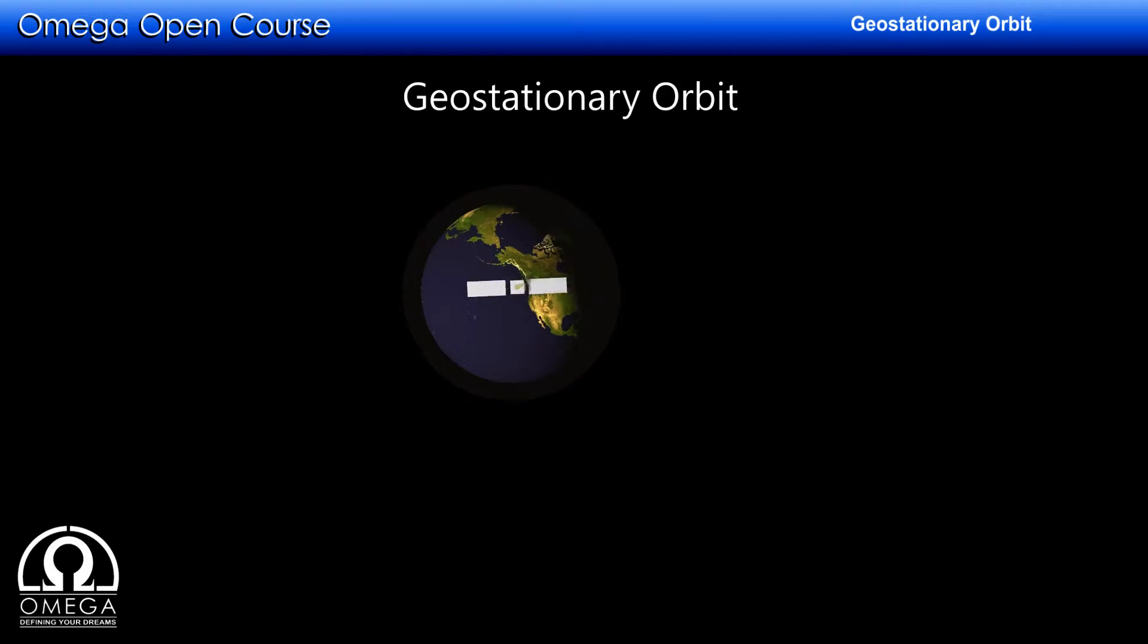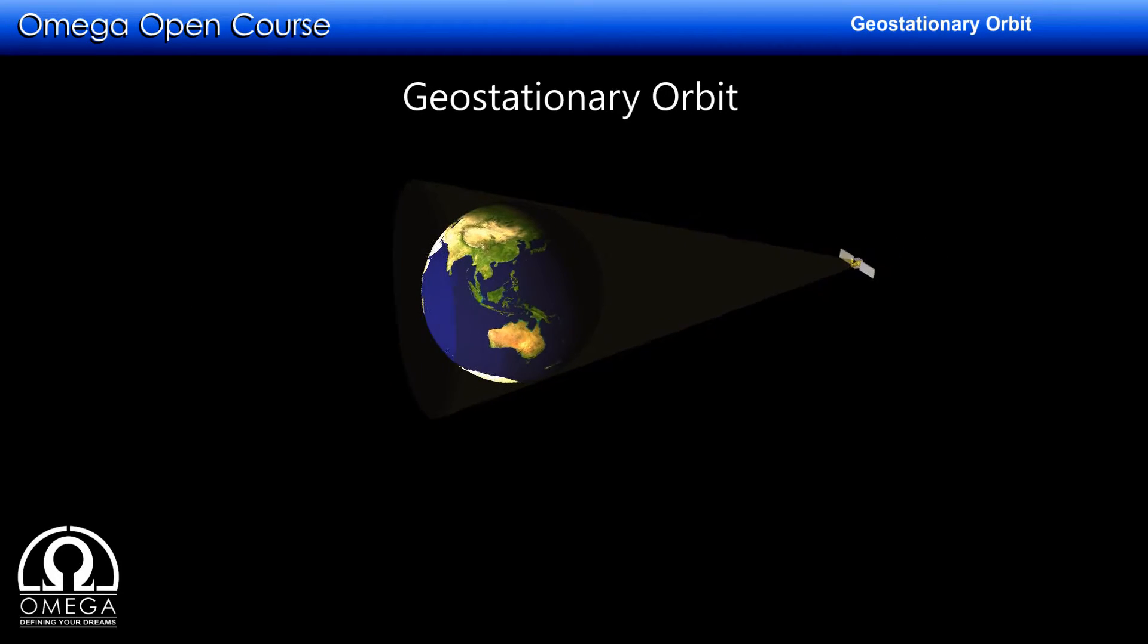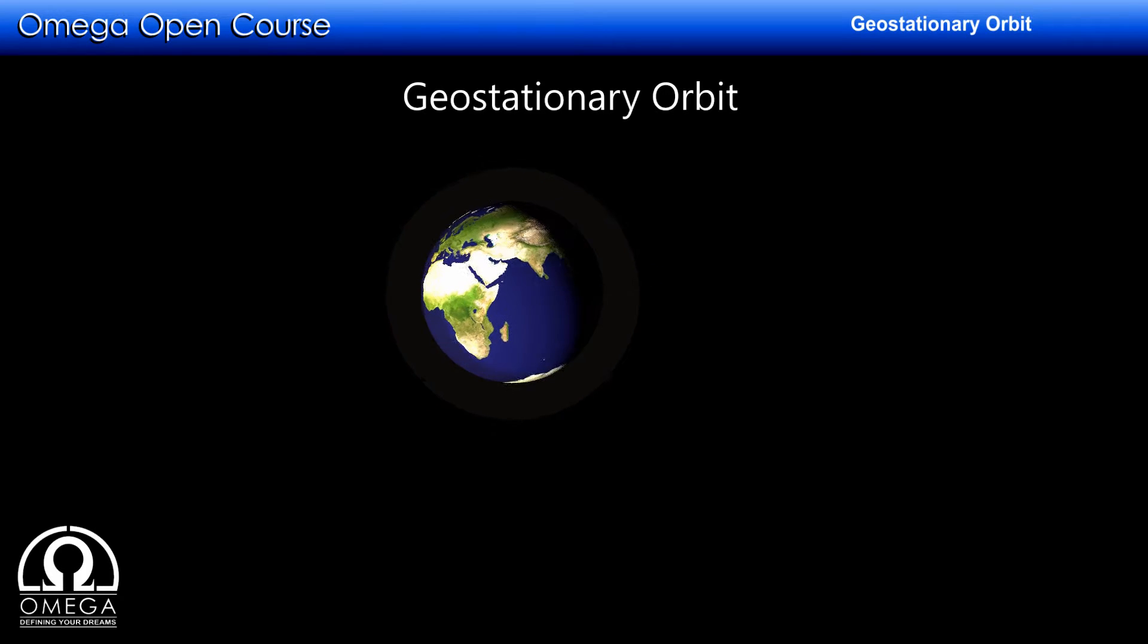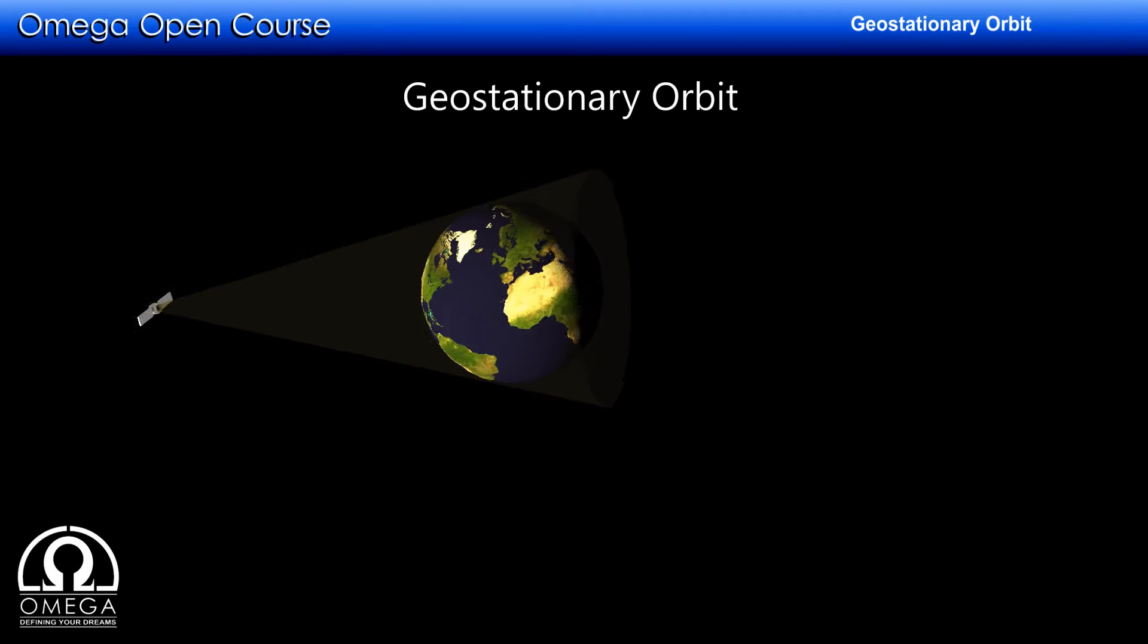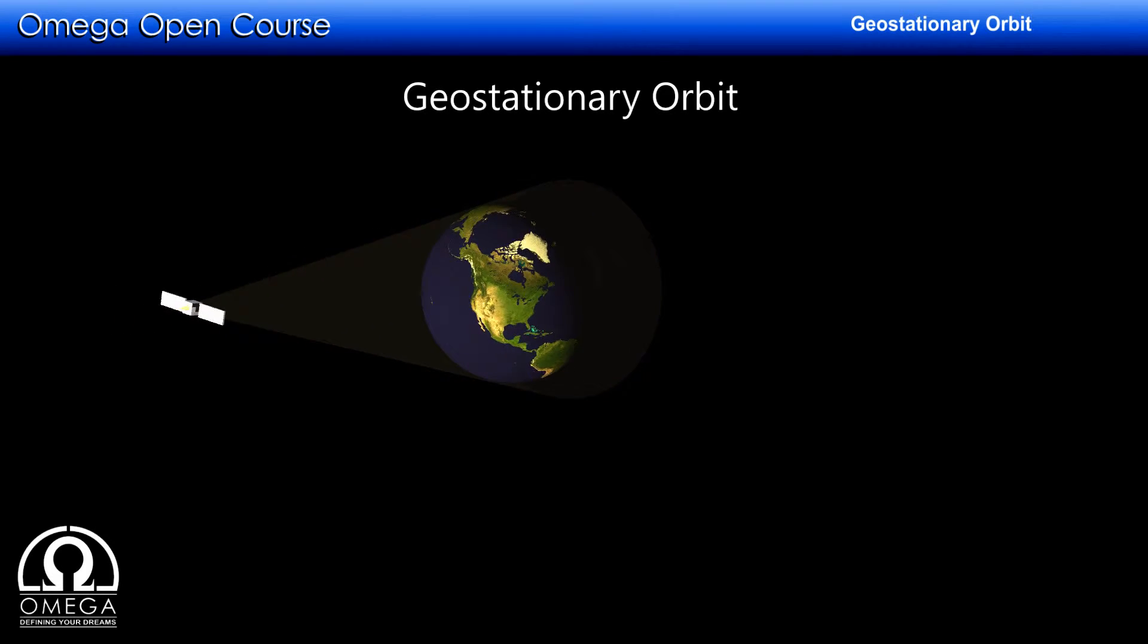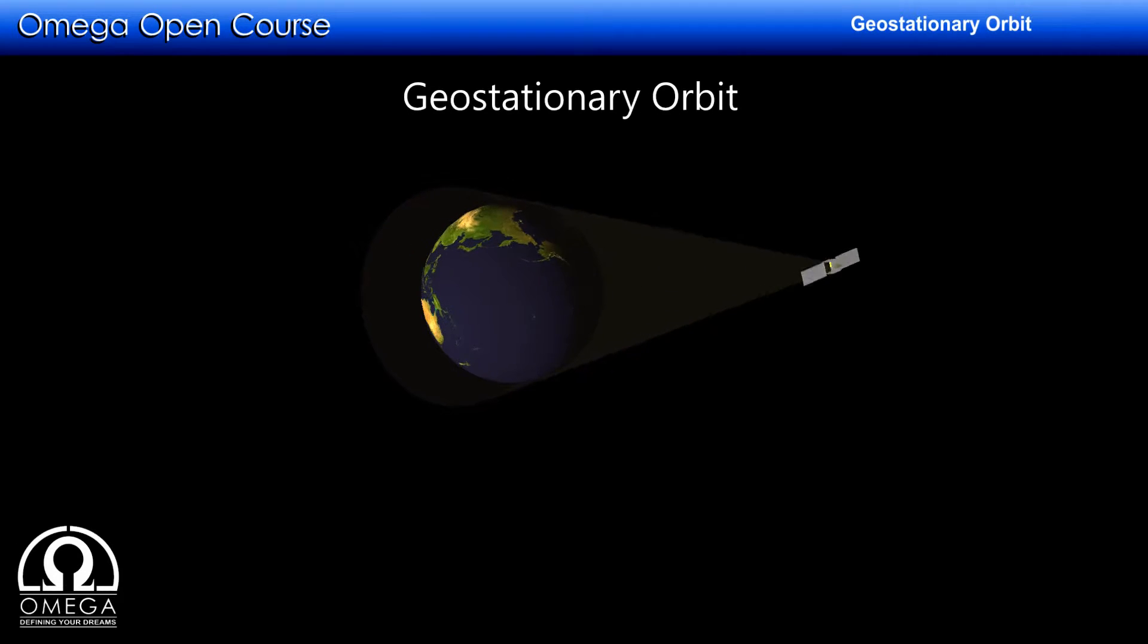An orbit becomes geostationary when its orbital period becomes equal to the rotation period of the Earth, which is approximately 23 hours 56 minutes. Apart from that, the plane of the orbit must coincide with the plane of the Earth's equator.